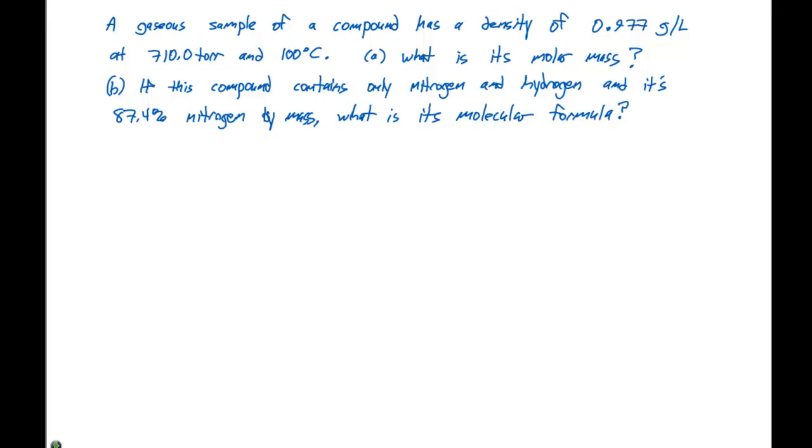This problem introduces density. The question is, how do we go from PV equals nRT to density? Remember that density is typically represented in grams per liter, or some type of mass per volume. Let's take this ideal gas equation and rearrange it to say n over V equals P divided by RT. This n over V has units of moles per liter, but density is in grams per liter.